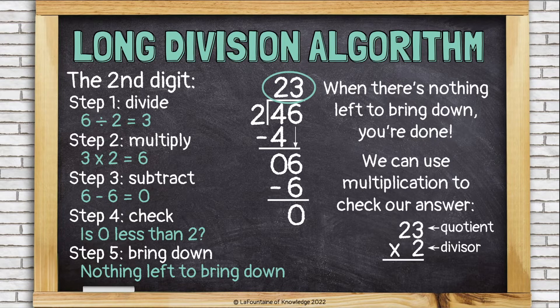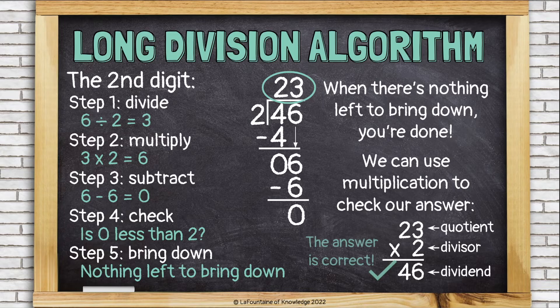Now it's a good idea to use multiplication to check your answer. Write down your quotient, 23, and multiply it by your divisor, which in this problem is two. You should get the dividend, 46. Two times three is six and two times two is four. Our answer is correct.